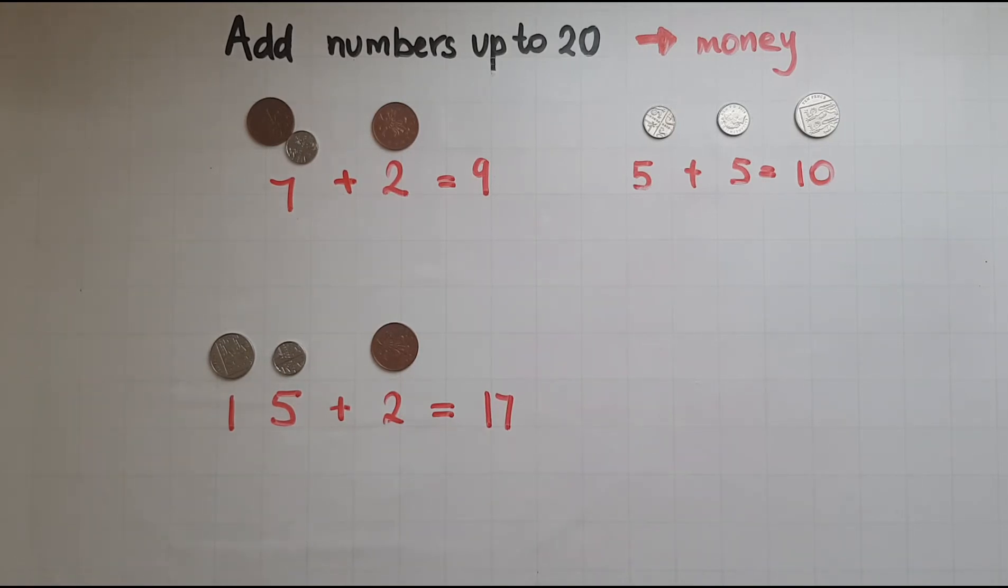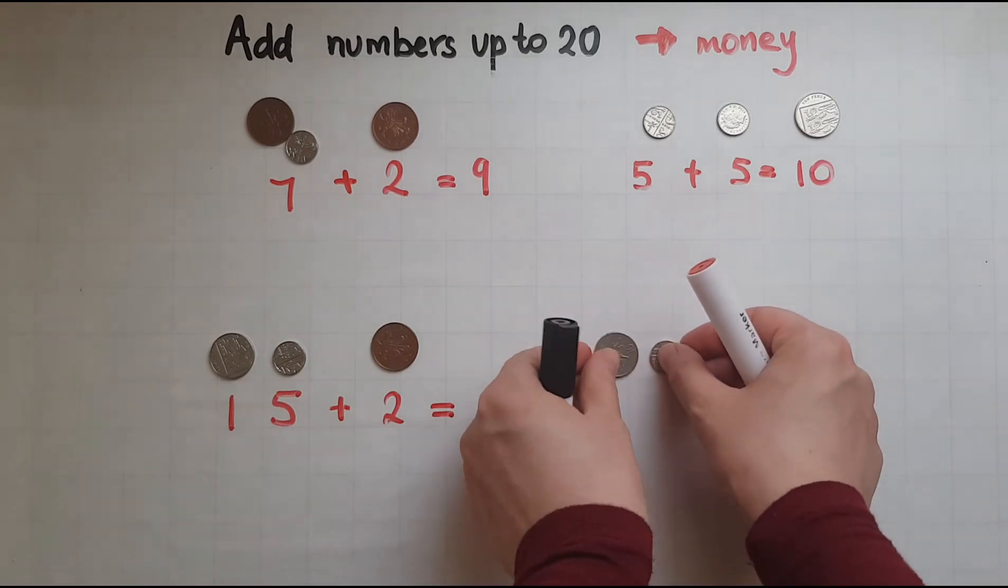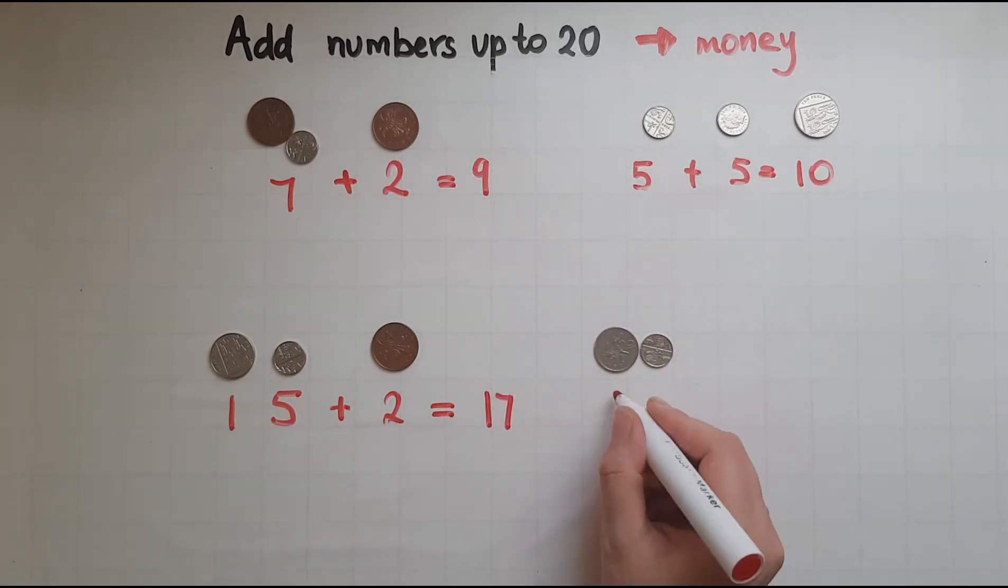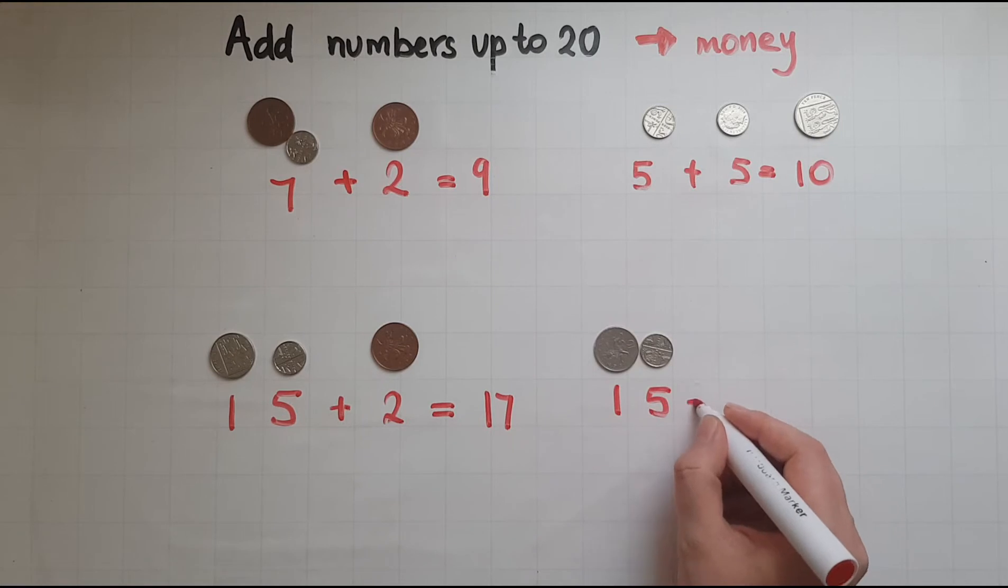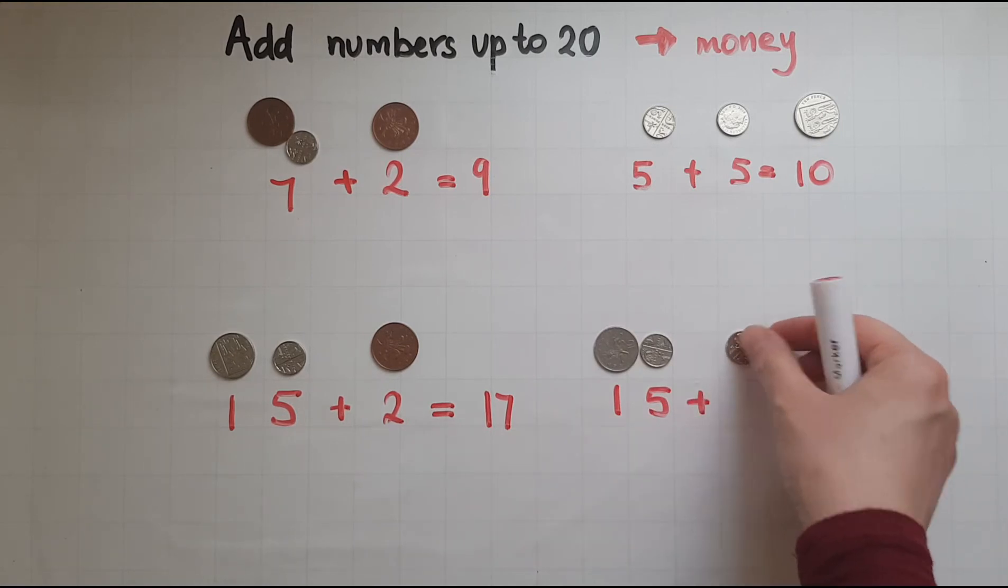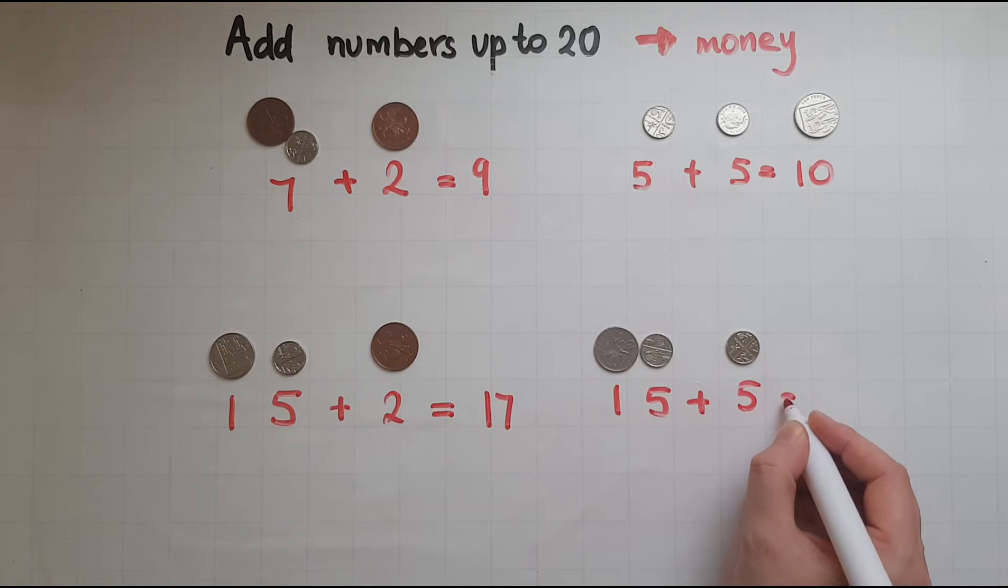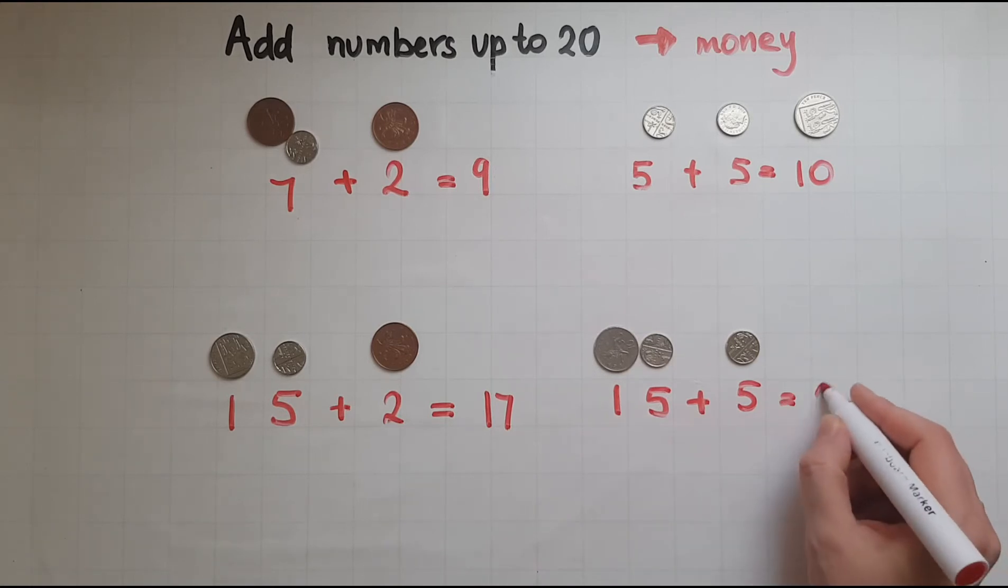Then I spent 15 pence on an item and five pence on another one. So all together that was 15, 16, 17, 18, 19, 20. So that was 20 pence, which is the same as this coin.